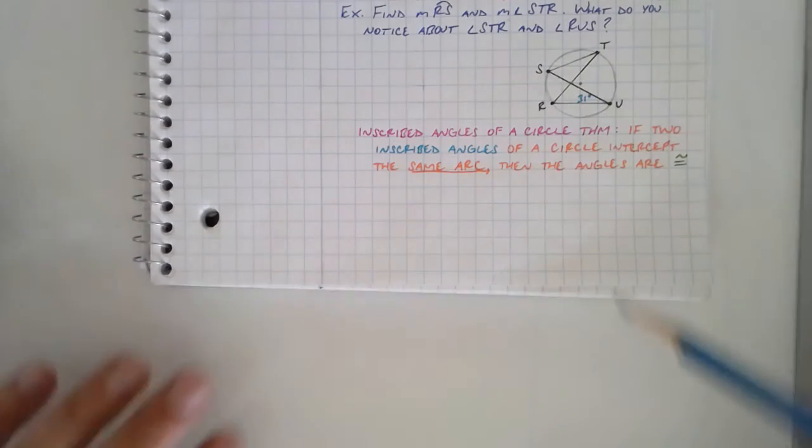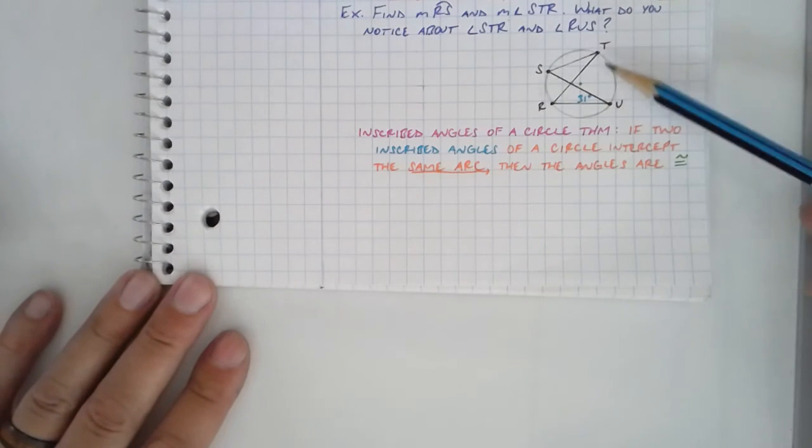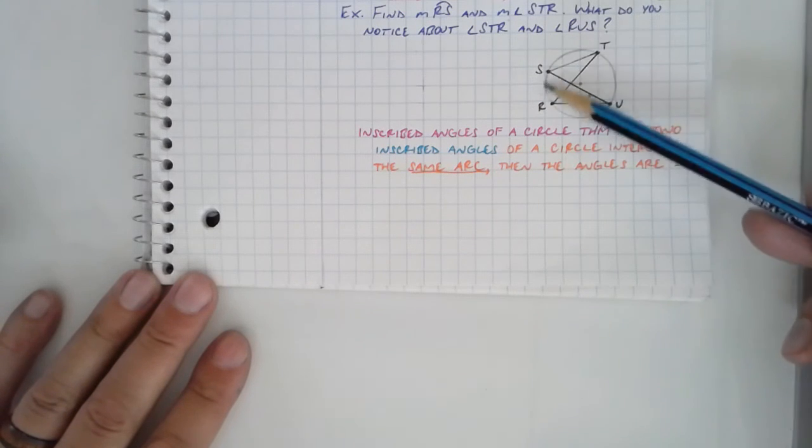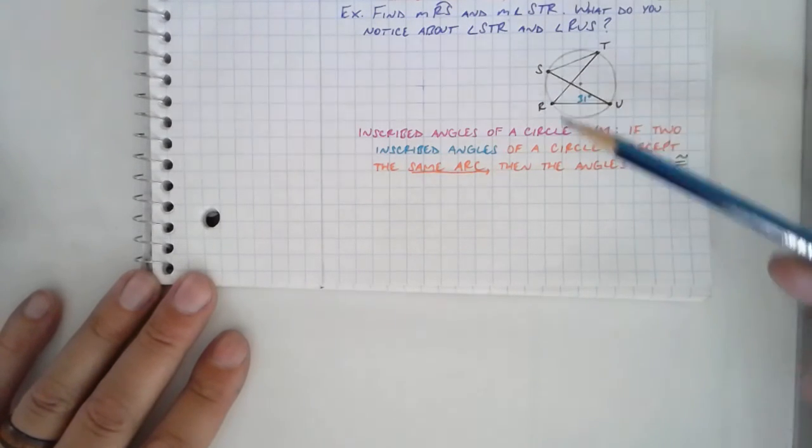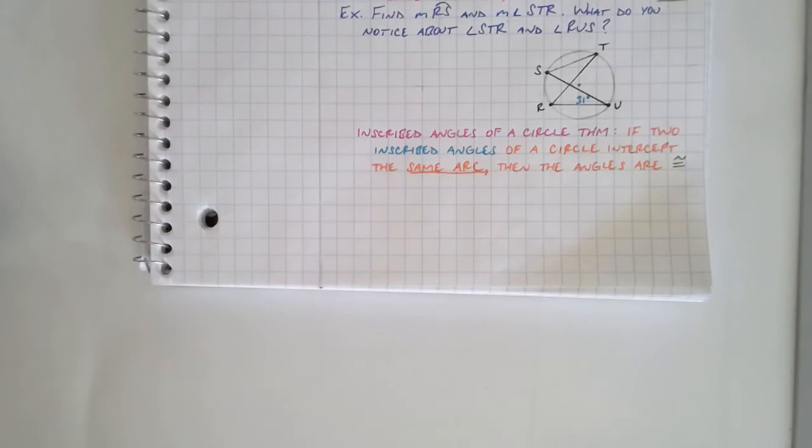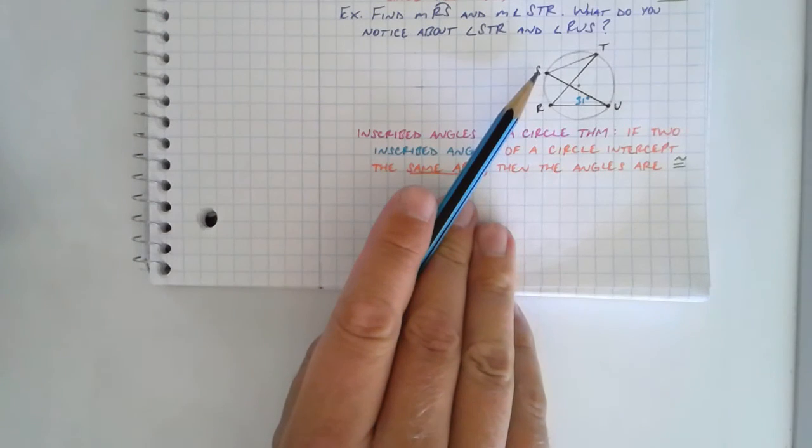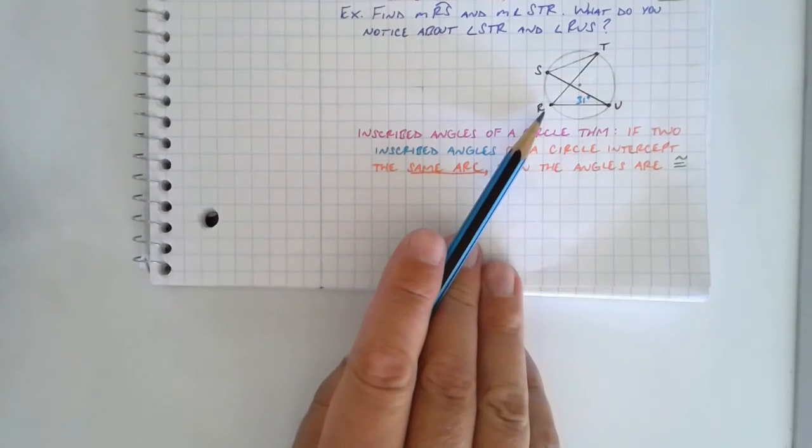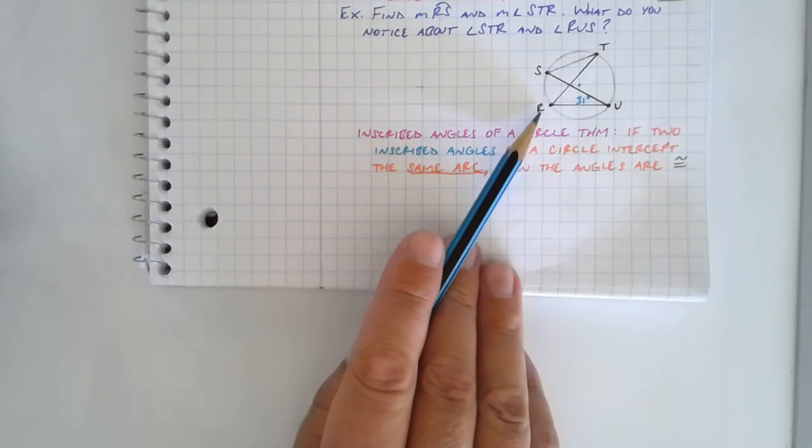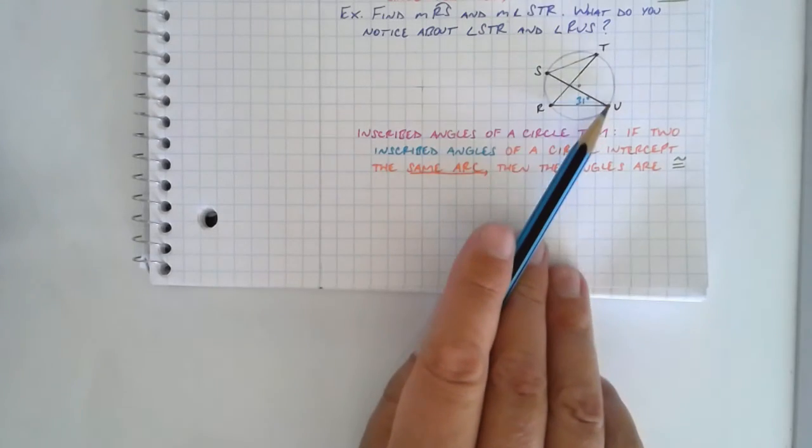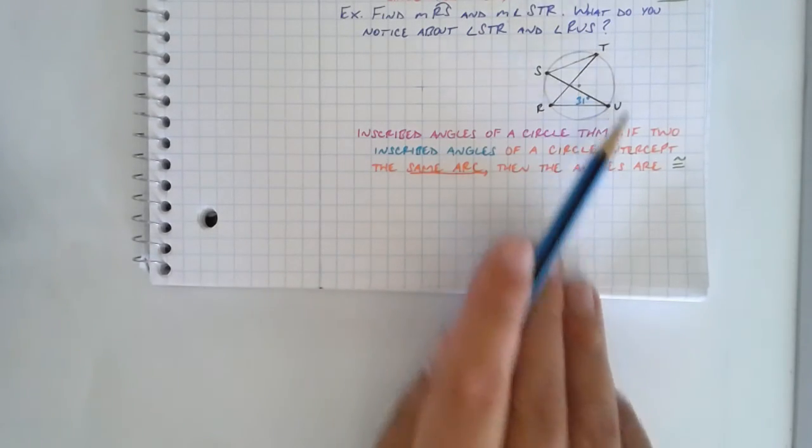kind of like in the diagram we just dealt with, angle T and angle U had the same intercepted arc, RS. If two inscribed angles of a circle intercept the same arc, then the angles have to be congruent to each other. Because they have to be exactly half of that same inscribed arc. And you'd notice the same thing that angle S and angle R, whatever these end up being, they have to be congruent to each other because they also have the same intercepted arc, arc T U up there.